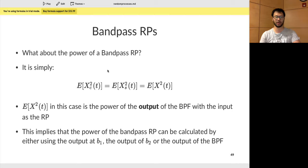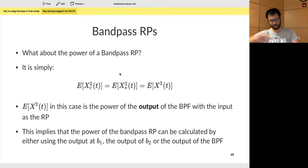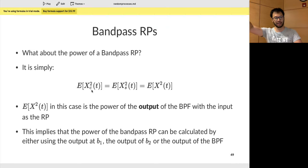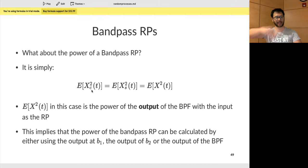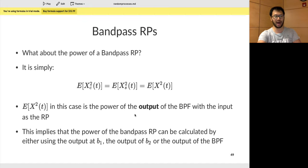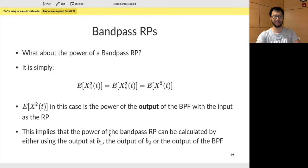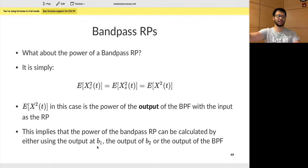Regarding the power of a bandpass random process: it can be shown that the output power E[X²(t)] at the bandpass filter output equals the power at the top branch (at B1) or the bottom branch (at B2). So if you want to calculate the bandpass random process power, you can look at the output of either low-pass filter branch, or at the output — all three give the same answer.